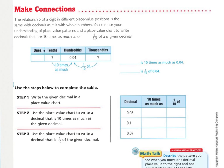Make connections. The relationship of a digit in a different place value position is the same with decimals as it is with whole numbers. You can use your understanding of place value patterns and a place value chart to write decimals that are ten times as much, or one-tenth of any given decimal.